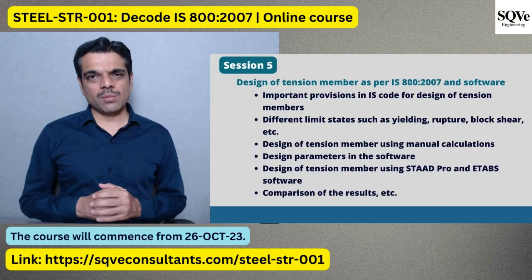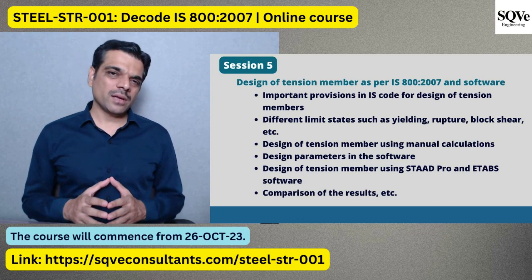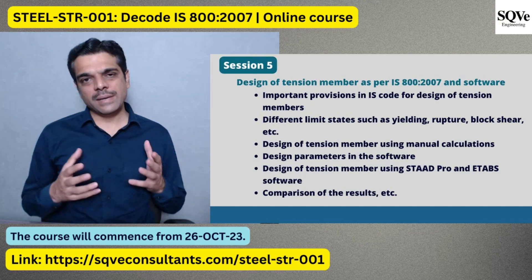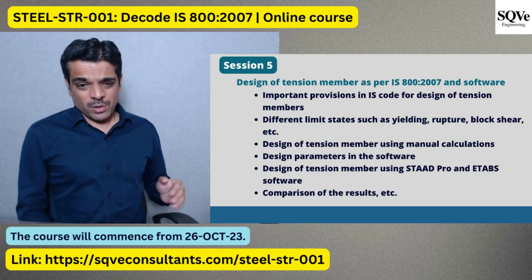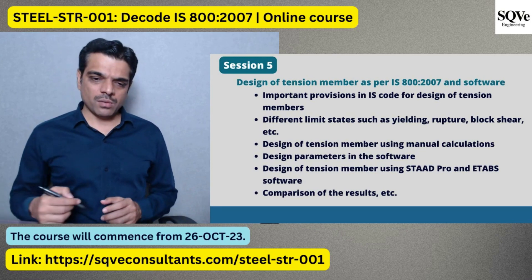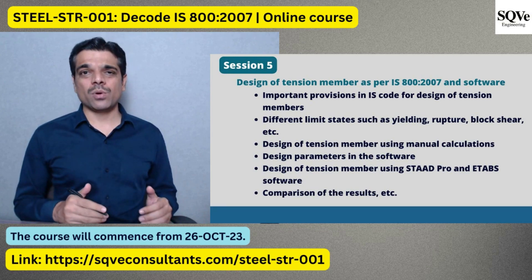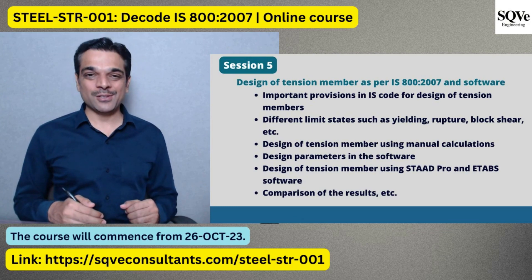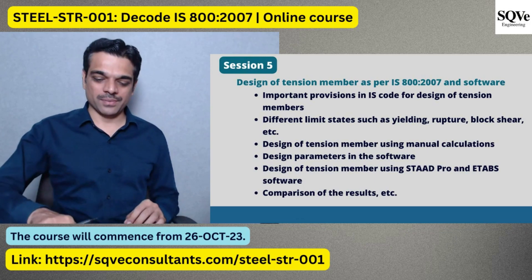The next session covers design of tension members as per IS code. We will discuss the important provisions, different limit states such as yielding, rupture, and block shear. Design will be performed manually as well as in StaadPro and ETABS, with results compared. We will also highlight the design parameters in the software that need to be managed properly for appropriate design of tension members.